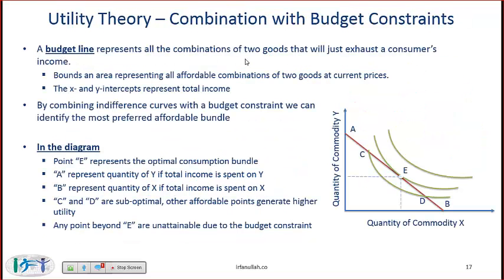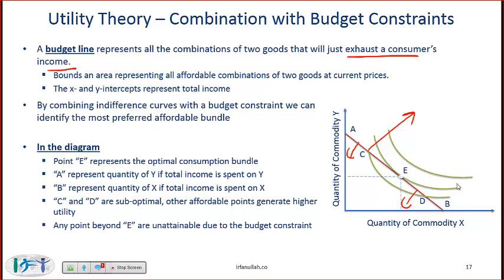The budget line represents the combinations of two goods that will just exhaust a consumer's income. It bounds an area representing all affordable combinations at current prices. The red line shown here is the budget constraint — to the left and below this line is what is affordable; to the right is not affordable. Combining the budget constraint with the indifference curves allows us to identify the most efficient bundle.